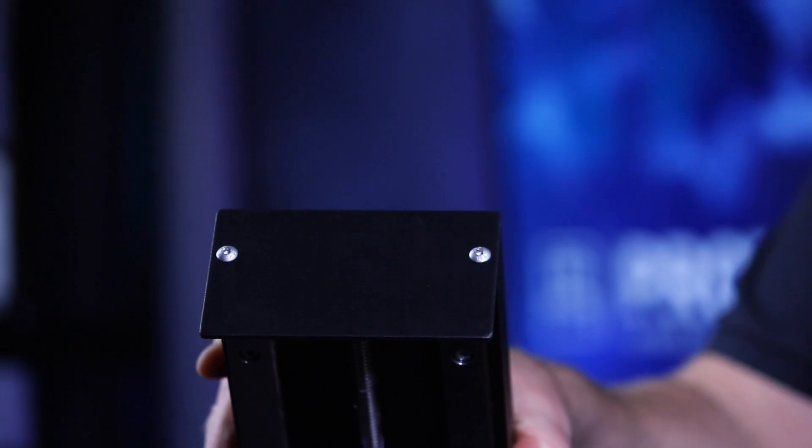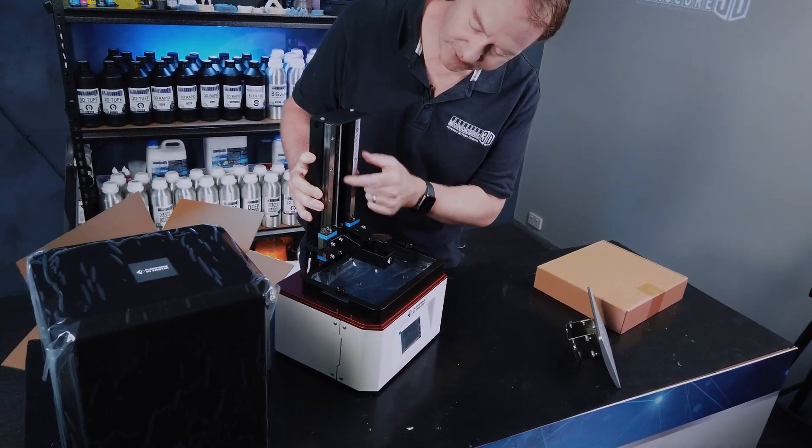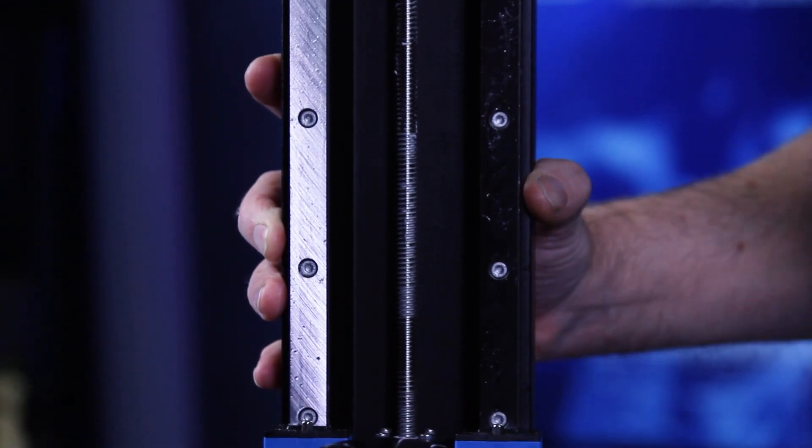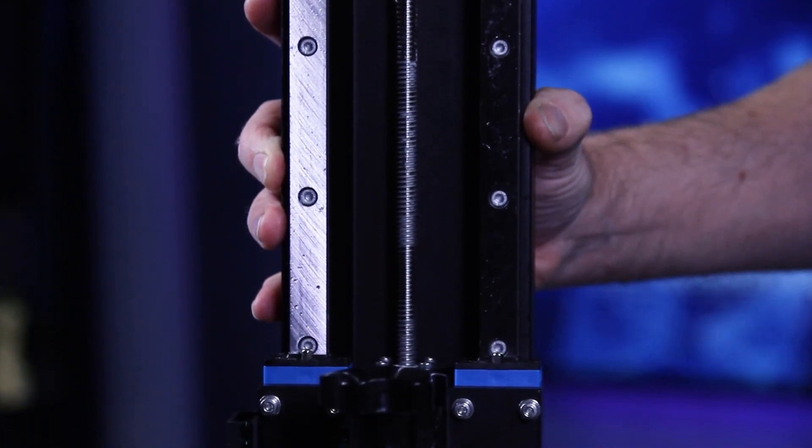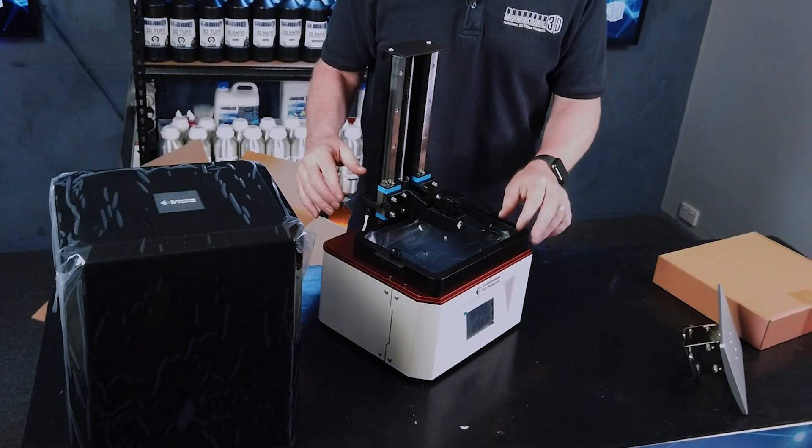And a nice, obviously, little dust cover at the top there. Just keeps dust and things off that lead screw. See a little bit of lithium grease on the worm drive there. That sort of goes away after you go up and down a few times. But make sure you keep that lubricated with some more lithium grease if it dries out.